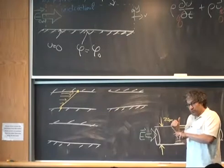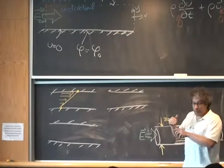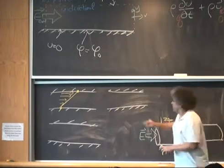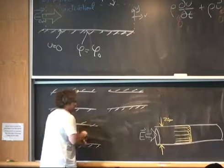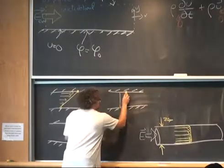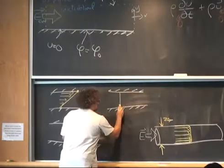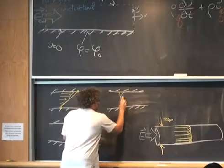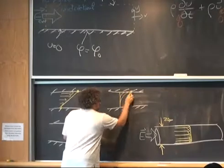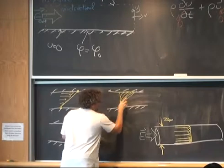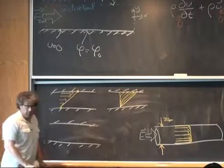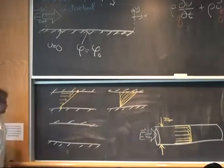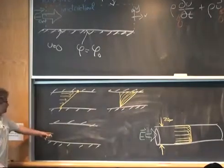Then after it accelerates at the top, now the fluid nearby reacts. So the startup of this flow looks like a series of intermediate profiles, and eventually you get the equilibrium distribution.